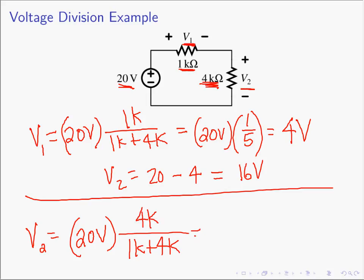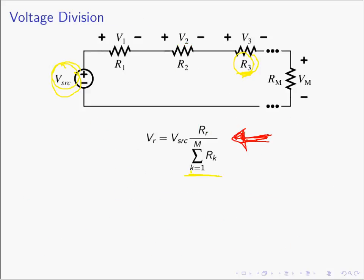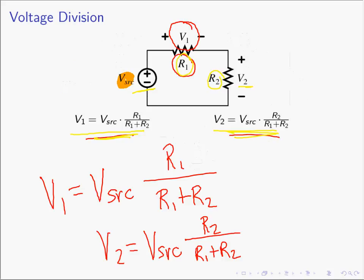Voltage division is a method by which a voltage source is split among two or more series resistors. At the very least, commit the two-resistor case to memory, since it occurs so often in practice — you want to find v1 right away without struggling through KVL each time. This is a useful trick for your toolbox, and in the next lecture we'll look at the dual of this: current division.